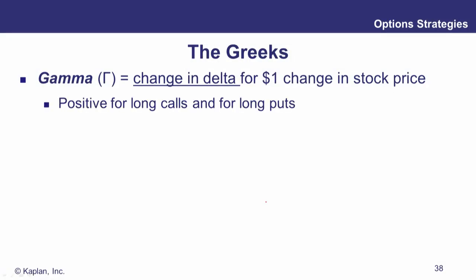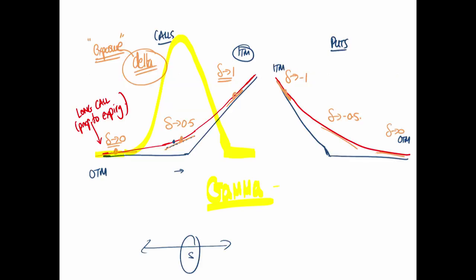Long options have positive gamma. As the underlying goes up and we move to the right, delta goes up from 0 to 1 — that's a positive relationship, which is positive gamma. For a long put, as S goes up, delta increases — it gets less negative, going from minus 1 up to 0 — so it's still a positive relationship between delta and the underlying.